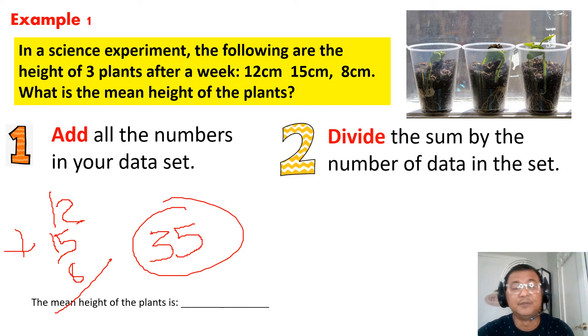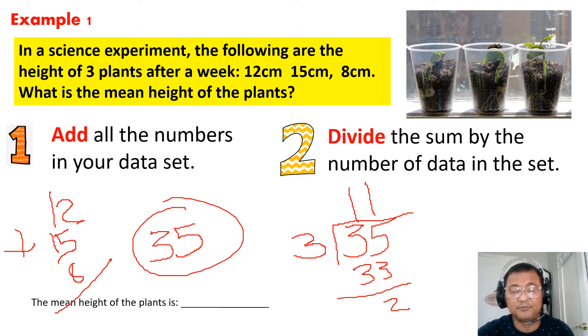What's next? Step number two. After getting the sum, we know it's 35. I divide it by what number? Yes, you will divide 35 by 3. So 35 divided by 3 is 11, you will get a 33, you have a remainder of 2. You could use a fraction two-thirds or if you want to use a decimal, 11.6. The mean height of the plant would be 11 and two-thirds centimeters.